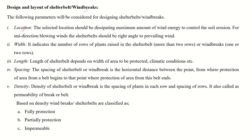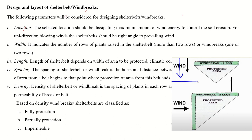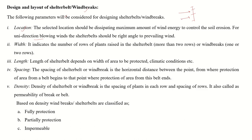The design aspects of shelter belts and windbreaks mainly depend on location — where you want to construct or plant the windbreak or shelter belt — wind velocity, and wind direction. The width depends on the number of rows of plants raised in the shelter belt. In shelter belts, more than two rows are constructed, whereas in windbreaks only one or two rows are used. The length of the shelter belt also depends on the width of the area to be protected and the climate conditions.